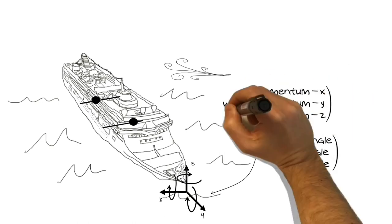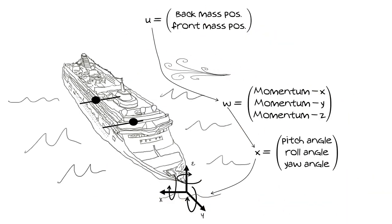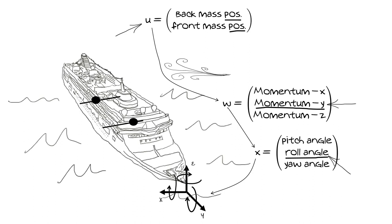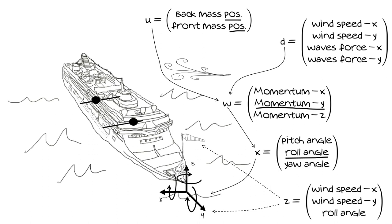The input vector u contains the momentums with respect to the x, y, z axes. Its components change the state and we can set them by changing the mobile mass position. More precisely, the mobile masses are actuators that convert positions into momentums. With this type of actuator we can only change the momentum with respect to the y-axis and therefore we can only control the roll angle. The disturbance vector includes the momentums generated by wind speed and wave forces.